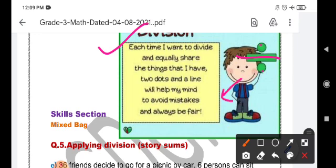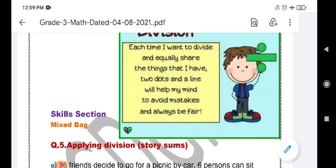That is, with these lines this little kid wants to make us understand what is division. Whenever we want to divide and share equally, that is division. So these two dots and a line in between is the sign of division and through division we divide equally without making any mistake.